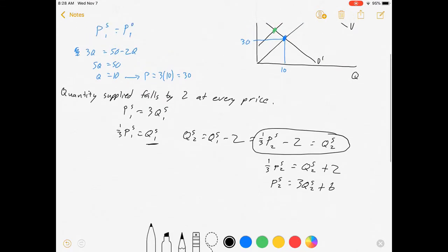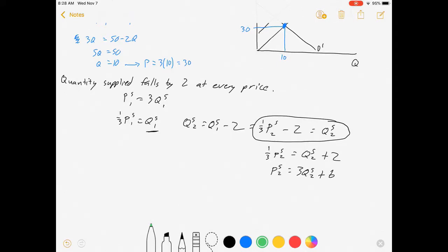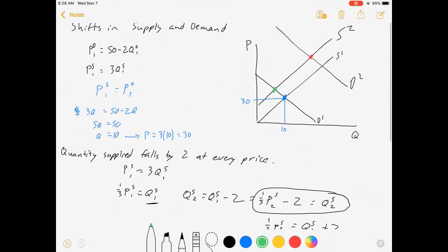To solve for my green equilibrium, my second one, I'm going to set ps2 equal to pd1. Because notice, we're looking at where demand curve 1 intersects with supply curve 2. And that's how you get this point.